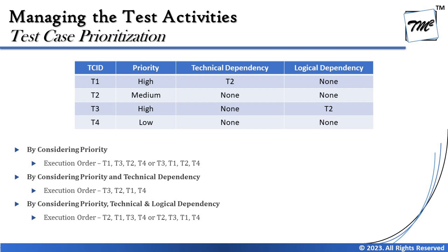Adding logical dependency: T3 is also dependent on T2, meaning both high-priority tests depend on T2. Considering priority, technical dependency, and logical dependency together, the execution order becomes T2, T1, T3, T4 or T2, T3, T1, T4. Since T2 unblocks both high-priority tests, once T2 runs, T1 and T3 become independent and can be run in either order. That's the complete context of the test execution schedule. Feel free to comment any questions below — keep learning, keep exploring, and happy learning!